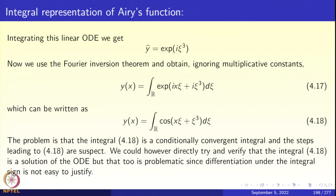The positive aspect is that we got an integral representation: y(x) = integral over ℝ of cos(x·χ + χ³) dχ, which is equation 4.18. This equation 4.18 is supposed to give us a solution of the Airy equation, but its derivation was formal. One option is to take 4.18 and directly check that it satisfies the Airy equation by differentiation, but there is a problem with that.